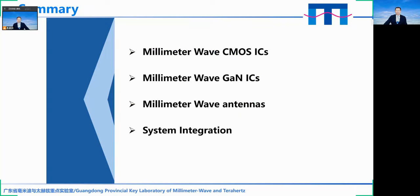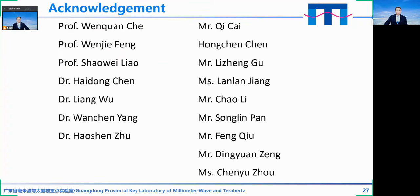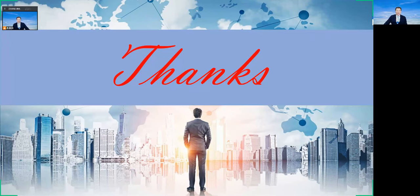As a summary, in this talk I introduced the key millimeter wave components of the CMOS phased transceiver chip, key components of the GaN front-end module, a millimeter wave antenna array with high isolation between elements to achieve wide scanning angle, and finally the system integration approach. Last but not least, I would like to applaud my colleagues and students in my team for their excellent contributions to the work I introduced here. Thanks.